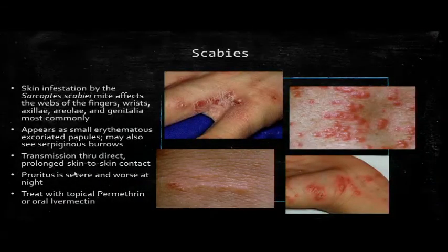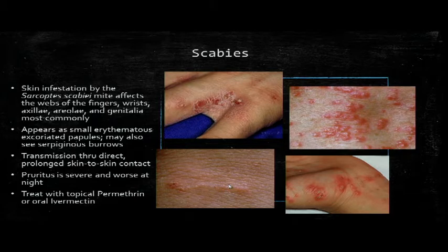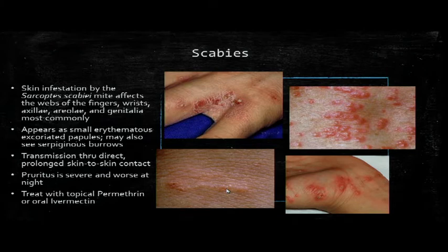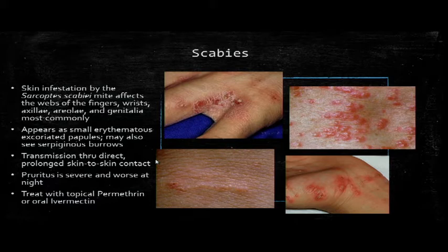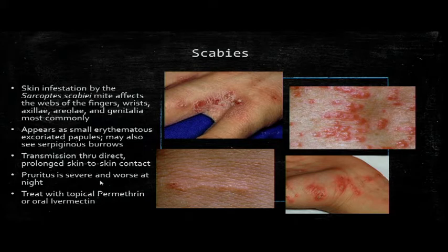Scabies appears as small erythematous excoriated papules and you may also see the serpiginous burrows. Classic appearance is in the webs of the fingers, and it also commonly affects the wrists, axilla, and genitalia. Transmission is through prolonged direct skin-to-skin contact — you can't just briefly walk into someone's exam room and get it. The rash is due to a type 4 delayed hypersensitivity reaction, which can worsen with subsequent exposures, and itching is extremely severe. For treatment, use topical permethrin applied for 8 hours and then washed off — not just putting it on and wiping it off immediately.